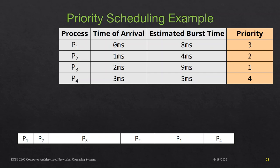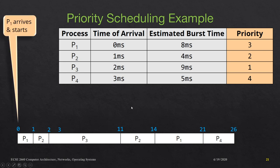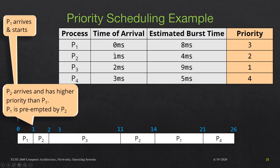So how are we going to sketch up a Gantt chart — which process is going to run on the CPU when? At 0 milliseconds P1 arrives and because there is nothing else on the ready queue, P1 starts executing. At 1 millisecond P2 arrives and because P2 has higher priority than P1, P2 will preempt P1 — it kicks P1 out of the running state and P2 starts taking up CPU execution for the next millisecond.